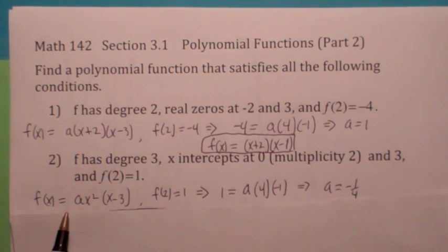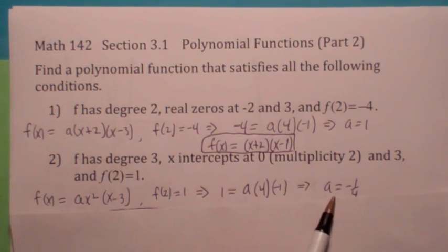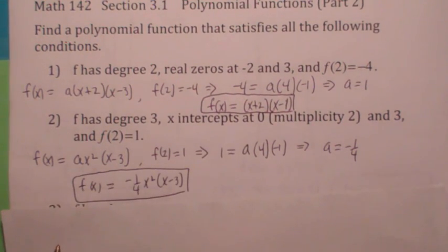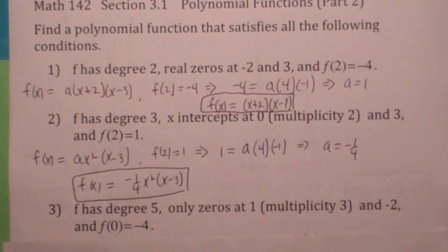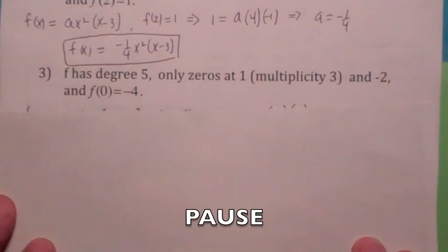Anyway, so f(2) = 1. So let's start off like this. f(x) is a times x squared, because it would have multiplicity 2 at 0, times x minus 3. Plug in the fact that f(2) = 1. You set y equal to 1. You plug in 2 for x. You get 4 times negative 1. In this case, a becomes negative 1 fourth. So the function looks like this: negative 1 fourth x squared times x minus 3. So again, go ahead and hit the pause button and try these on your own. And then see how I did it.